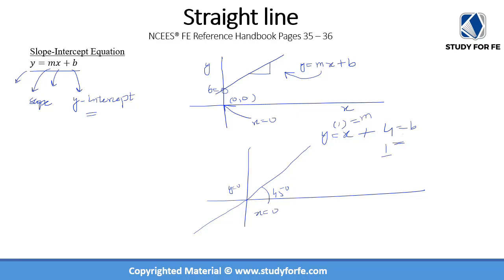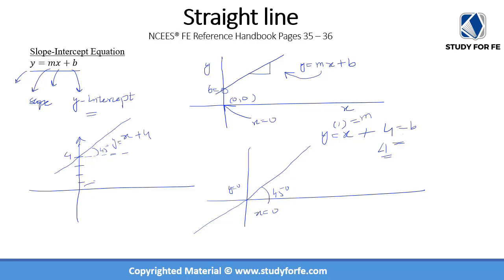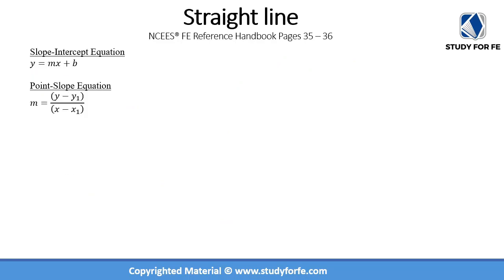That is not correct — our y has to equal 4. So I shift the line up: at 1, 2, 3, 4 on the y-axis I make a 45-degree angle with respect to the x-axis. This is the equation y = x + 4, because now when x = 0, y = 4. With the slope-intercept equation, if you are given m and b it is basically plug and play — substitute the values and you are done.